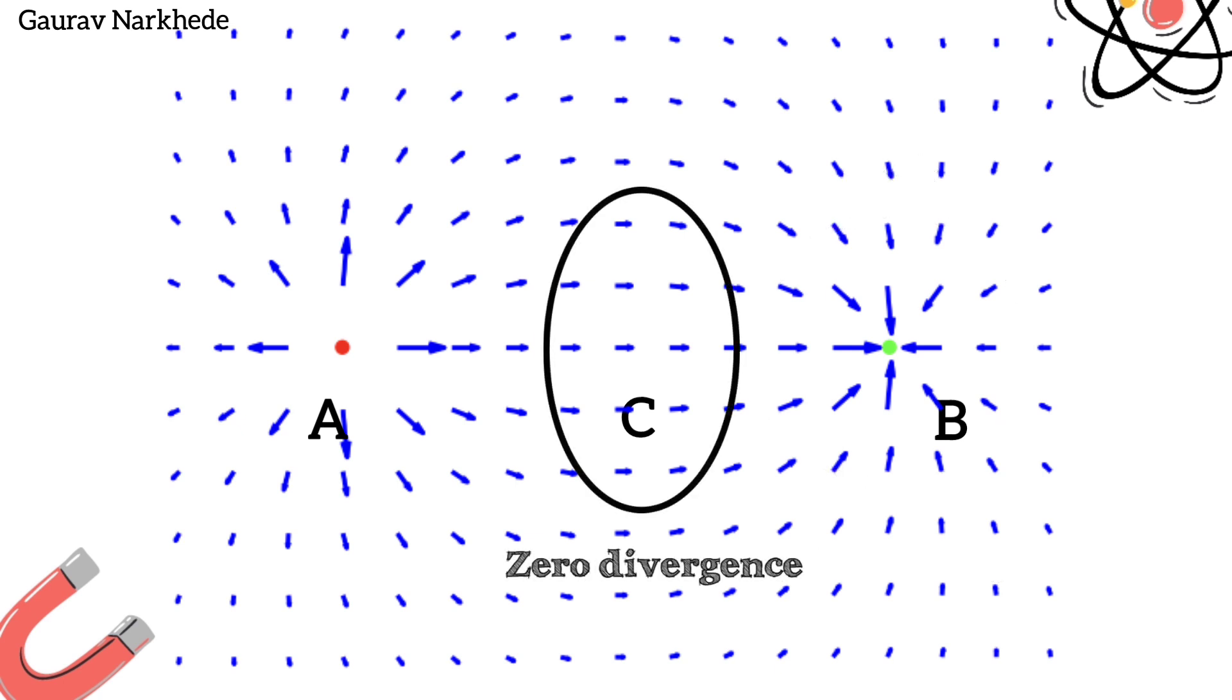At C, equal amounts of vectors come in and out through the region. Hence the divergence is zero.